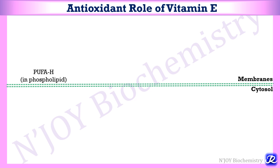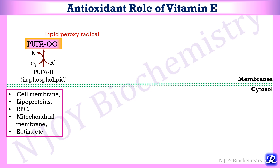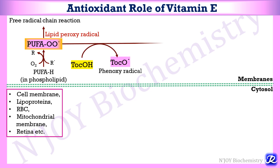Vitamin E is a potent natural antioxidant — a chain-breaking and peroxy radical-scavenging antioxidant. It protects lipophilic molecules susceptible to oxidant injury, such as polyunsaturated fatty acids (PUFA) and phospholipids in cell membranes, lipoproteins, RBCs, mitochondrial membranes, and the retina. When polyunsaturated fatty acids are subjected to oxidant injury by free radicals, lipid peroxy radicals form, initiating lipid peroxidation and a free radical chain reaction. Vitamin E stops this chain by converting the lipid peroxy radical into a hydroperoxy radical by donating its hydrogen, and the tocopherol itself becomes a phenoxy radical, which is relatively more stable.